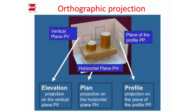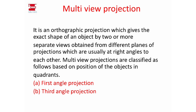We have a view on the horizontal plane where we can see the shape of this object. An engineer can see the shape from each plane. The views are important. Why do we do multi-view projection? With multi-view projection we create an orthographic projection to get the exact shape of an object from two or more separate views.